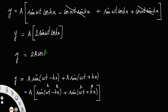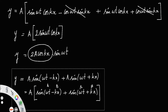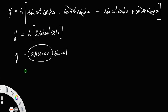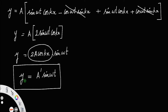So y = 2a cos(kx) · sin(ωt). We can define a new amplitude A' = 2a cos(kx), so the stationary wave expression becomes y = A' sin(ωt). This is the expression for the displacement of a stationary wave, where A' = 2a cos(kx).